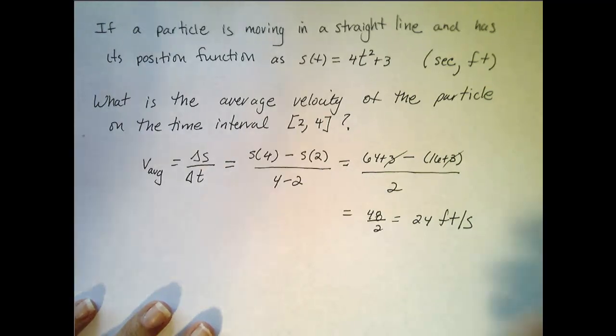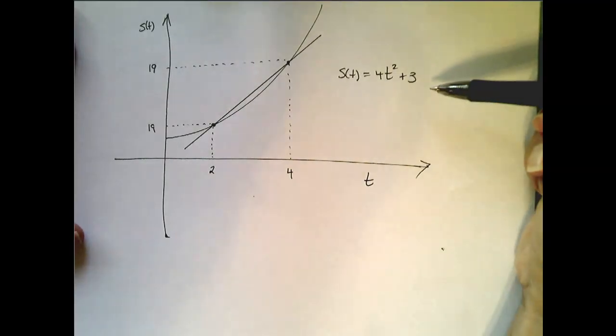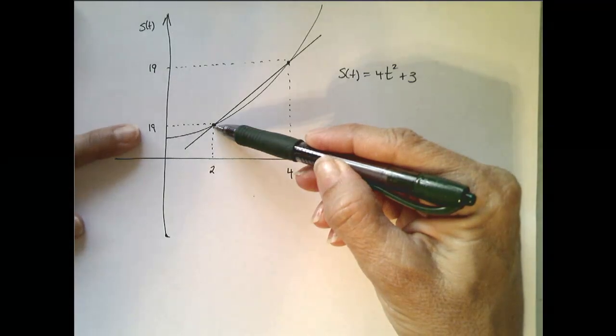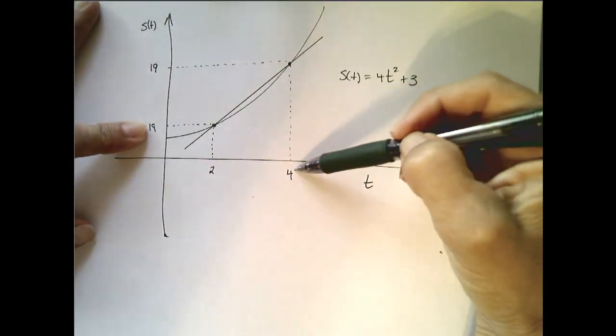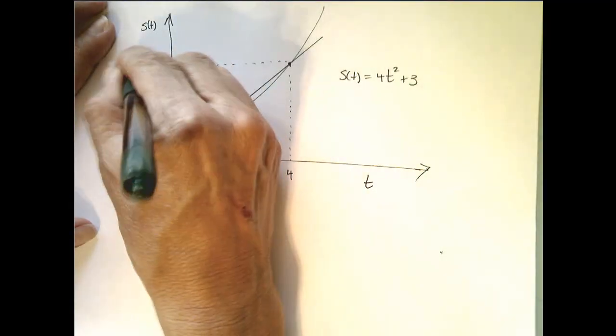So what does this mean graphically? Well, here is the graph of our particular position function. So when time is 2, my position is 19 feet. When time is 4, my position is 67 feet.